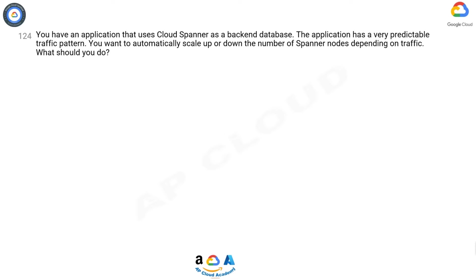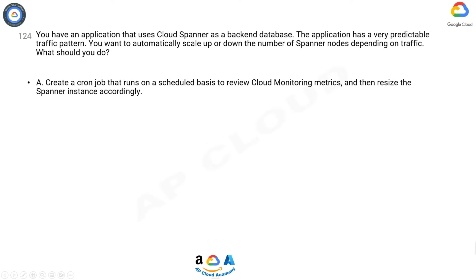Question 124. You have an application that uses Cloud Spanner as a back-end database. The application has a very predictable traffic pattern. You want to automatically scale up or down the number of Spanner nodes depending on traffic. What should you do?